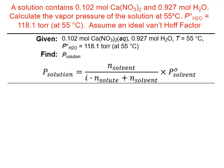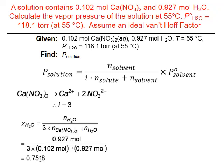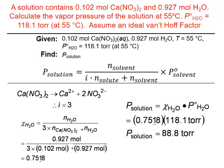To use the vapor pressure lowering formula with the Van't Hoff factor, we first determine the ideal Van't Hoff factor from calcium nitrate's formula: it dissociates into one calcium ion and two nitrate ions — a total of three ions — so I equals 3. Substituting into the mole fraction gives a mole fraction for water of 0.7518, significantly lower than for a non-electrolyte. Substituting into the vapor pressure lowering formula, the vapor pressure of the solution is 88.8 torr — much lower than the vapor pressure of pure water.